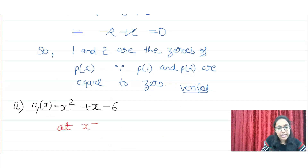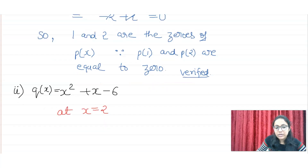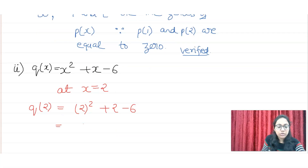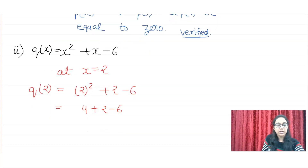First, at x = 2: Q(2) = 2² + 2 - 6, so here I will get 4 + 2 - 6, which gives 6 - 6, and we get 0.